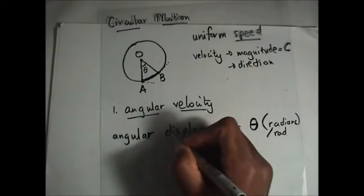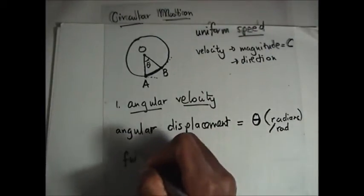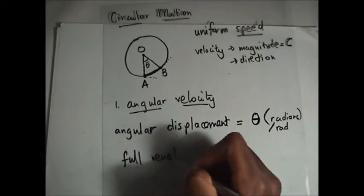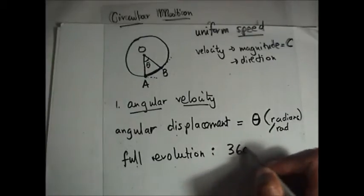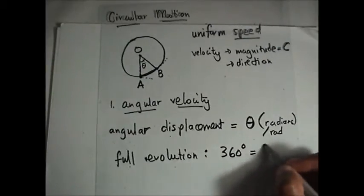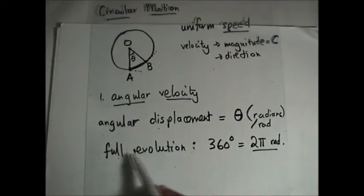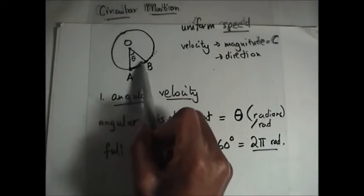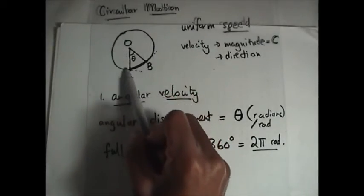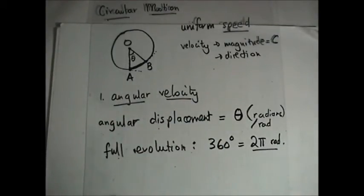By geometrical calculations and a bit of mathematics, a full revolution in degrees is equal to 360 degrees, but in radians it is equal to 2π radians. So if the radius travels from OA and goes all the way around back to the same point, a full revolution corresponds to an angle of 2π radians.